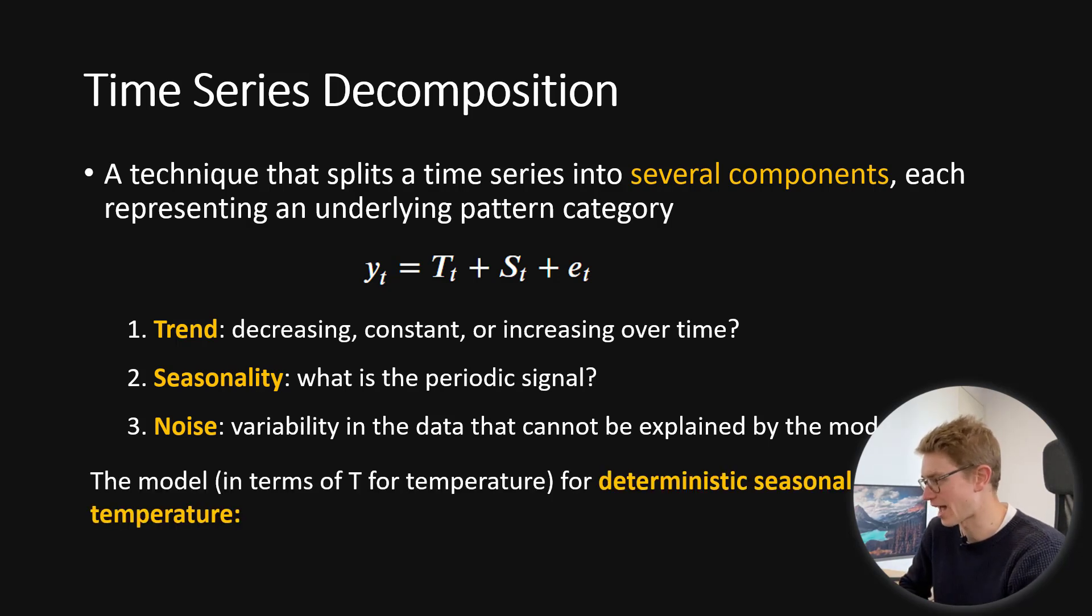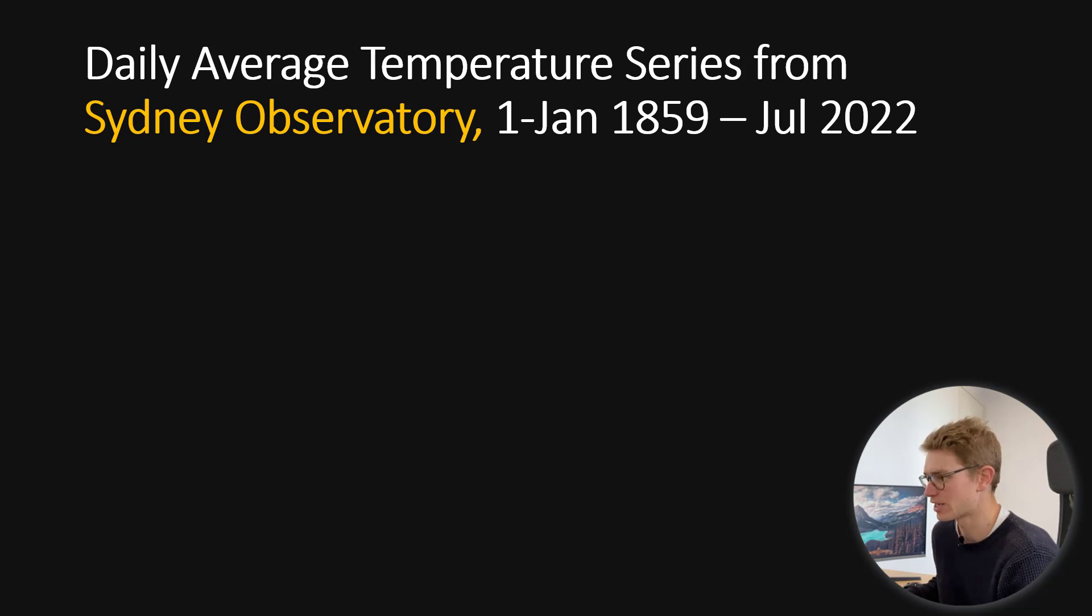The model that we're going to have is deterministic seasonal mean temperature of our daily average temperature series. We're going to model this with a trend component and a seasonal component. Daily average temperature series is from Sydney Observatory. We have data going back from 1st of January 1859 to today, just over 160 years.